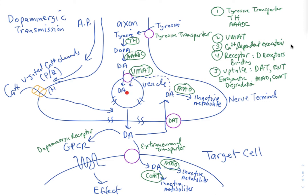Dopamine can also be removed extraneronally through extraneuronal transporters. Inside those extraneuronal cells, enzymatic degradation can occur — MAO is found there, and also catechol-O-methyltransferase, COMT, which transfers a methyl group to dopamine. After all, dopamine is a catecholamine, forming an inactive metabolite.